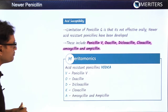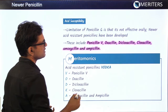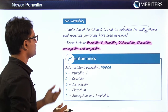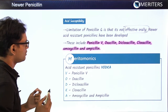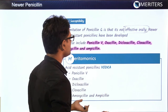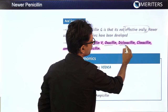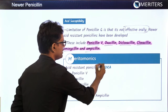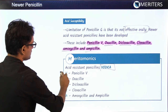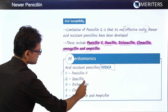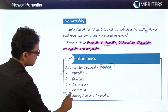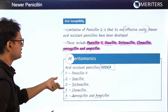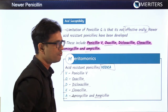Regarding acid susceptibility: Penicillin G is not effective orally, so newer acid-resistant penicillins have been developed. The drugs which are acid-resistant can be remembered with the mnemonic VODKA: V for Penicillin V, O for oxacillin, D for dicloxacillin, K for cloxacillin, and A for amoxicillin as well as ampicillin.